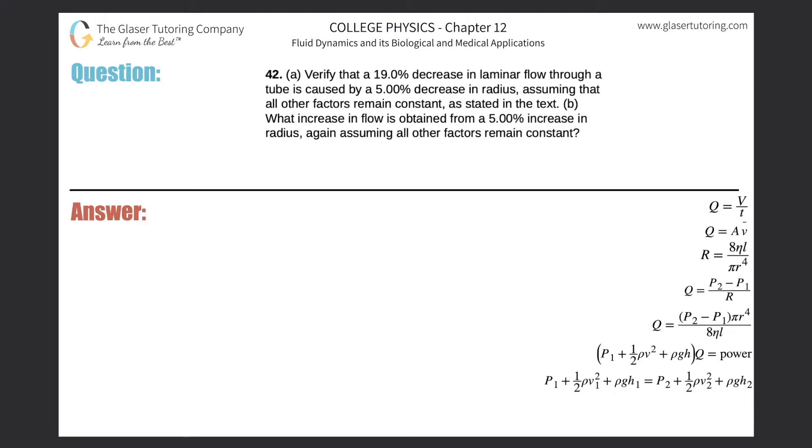Number 42, letter A. Verify that a 19% decrease in laminar flow through a tube is caused by a 5% decrease in radius, assuming that all other factors remain constant.